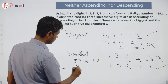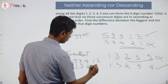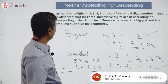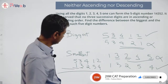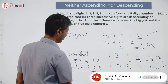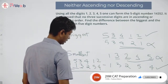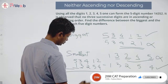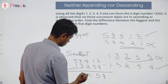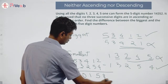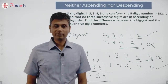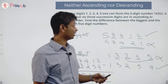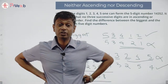The largest is 53412 and the smallest is 13254. Subtracting: 53412 minus 13254. Working it out: 12 minus 4 is 8, 10 minus 5 is 5, 3 minus 2 is 1, giving the answer 40158.